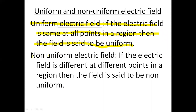Non-uniform means: if the electric field is different at different points in the region I have considered — one point has a certain electric field value and other points have different values — it is not the same. So that is called non-uniform electric field. To summarize: uniform electric field is one in which the field is the same at all points in a region; non-uniform electric field is one where the field is different at different points.